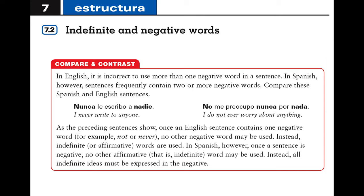In English, a double negative makes a positive, so it's wrong to use two negatives. In Spanish, however, it's common to have two or more negative words — sometimes up to three. Once the English sentence has one negative, no other negative word can be used. In Spanish, once a sentence is negative, no affirmative word can be used, so every indefinite idea must be expressed through negative vocabulary.